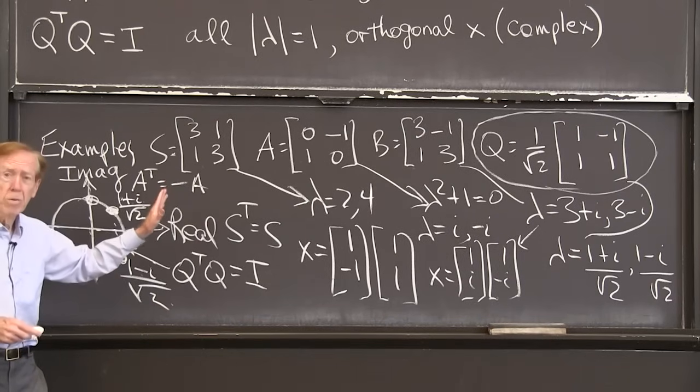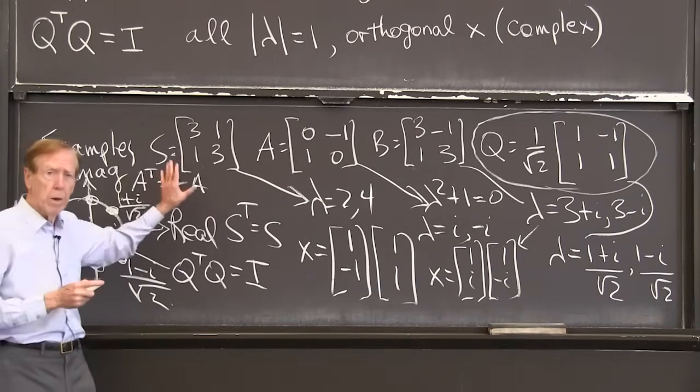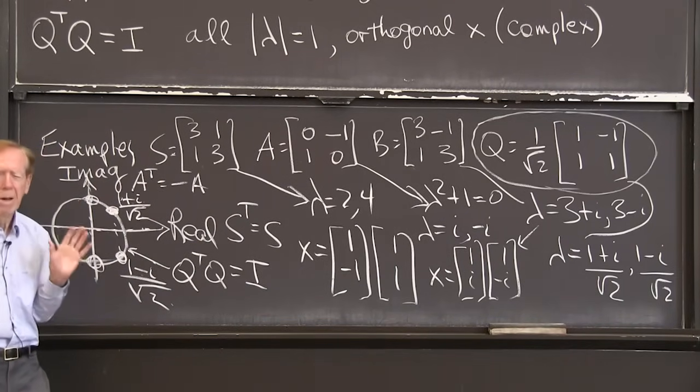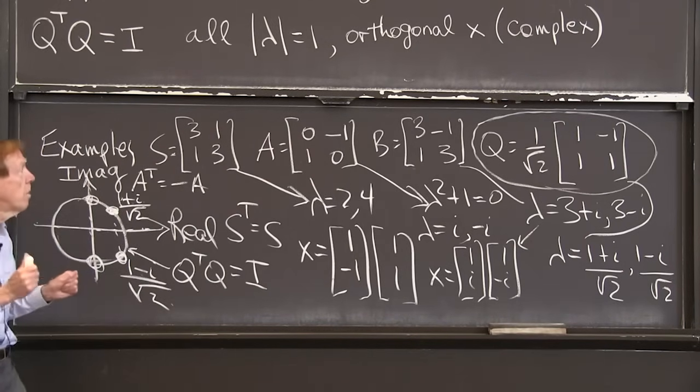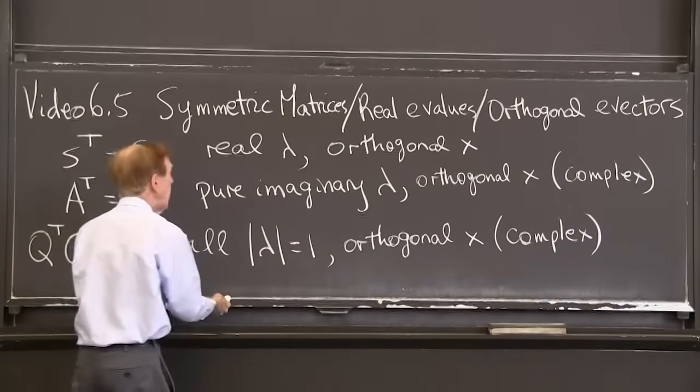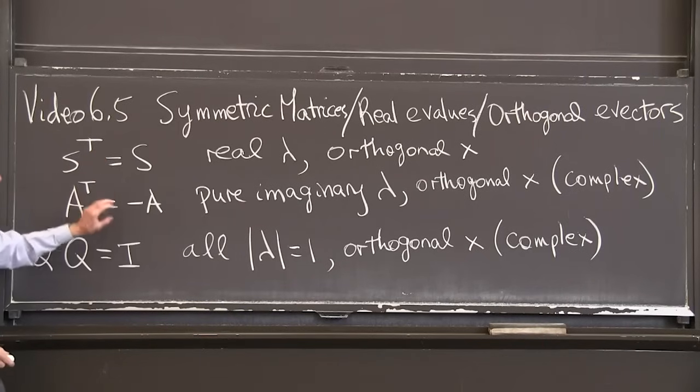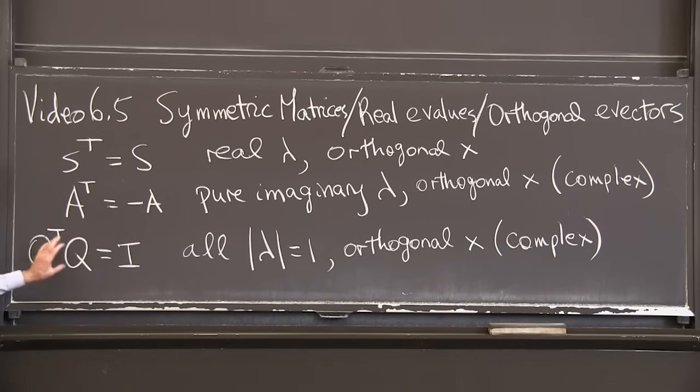Each of those facts that I just said about the location of the eigenvalues has a short proof, but maybe I won't give the proof here. It's the fact that you want to remember. Real from symmetric, imaginary from anti-symmetric, magnitude 1 from orthogonal.